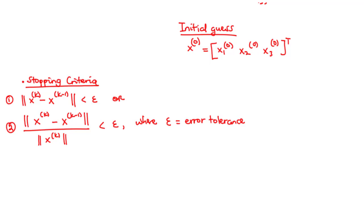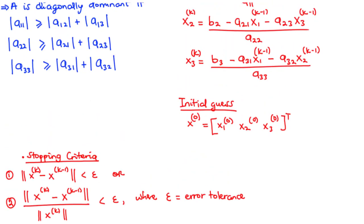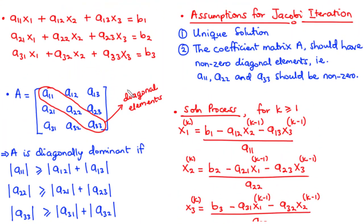Thirdly, we stop when the value obtained from either of the two error expressions — depending on which one you are using — for each xi is less than epsilon, where epsilon is the error tolerance given in the problem. Whenever the expression for each xi is less than the error tolerance, we stop the iteration. This is a brief overview of the Jacobi iteration method.